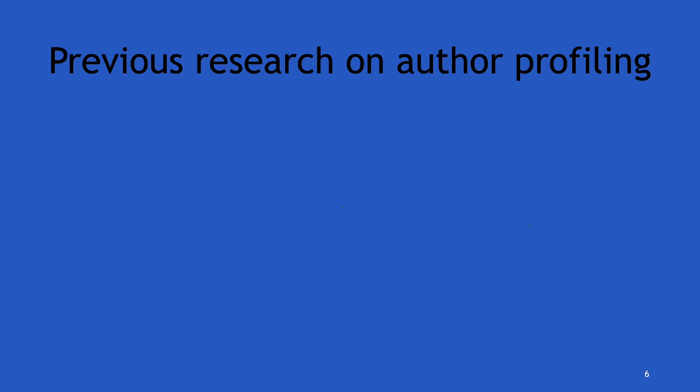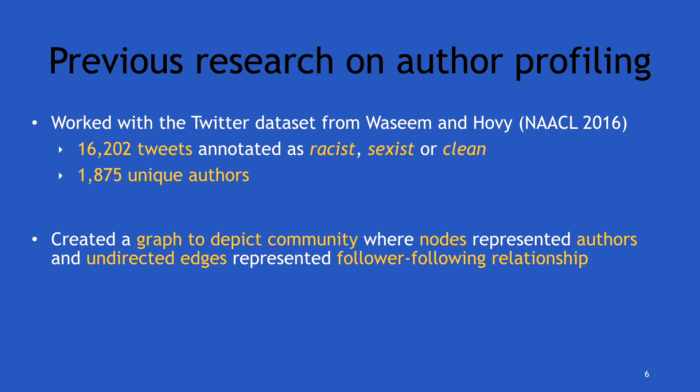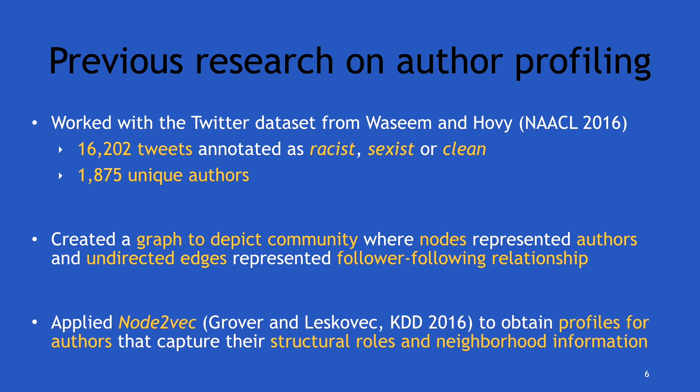That is the line of work we followed in our previous research. We worked with the same dataset as Wasim and Hovi, which contains about 16,000 tweets written by around 1,900 unique authors. We created a graph of these authors where we instantiate an edge between two authors if one follows the other, and we applied Node2Vec to this graph to generate embeddings for users, capturing their neighborhood information and structural role in their communities.